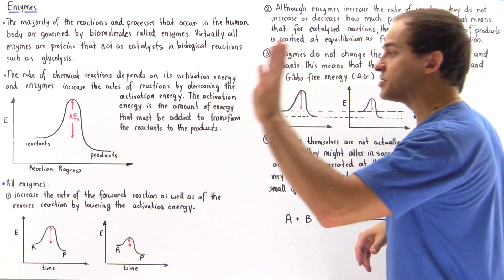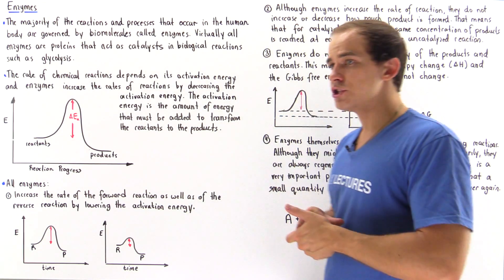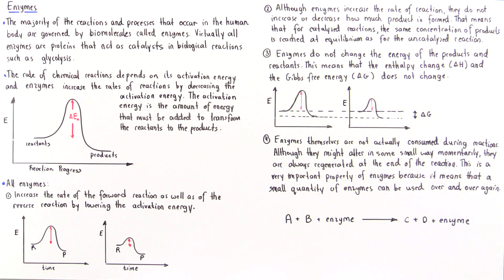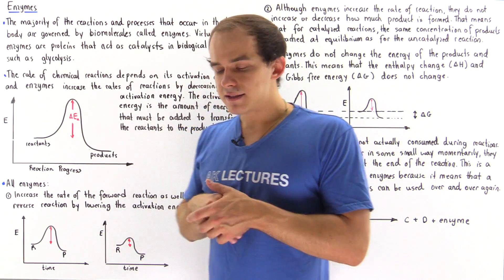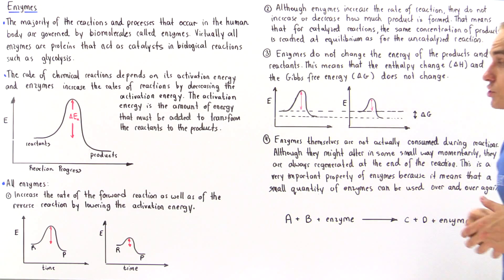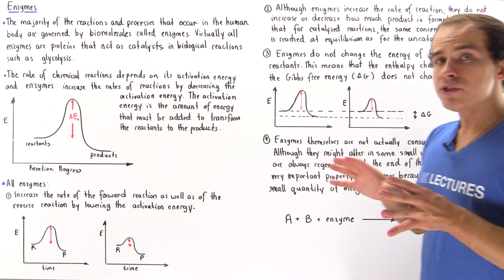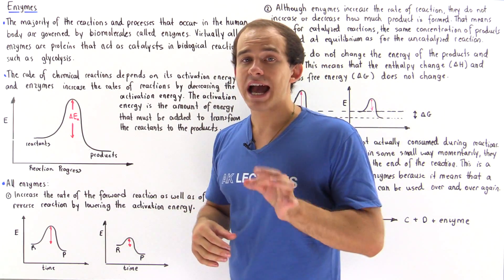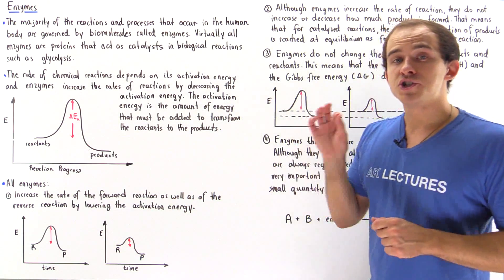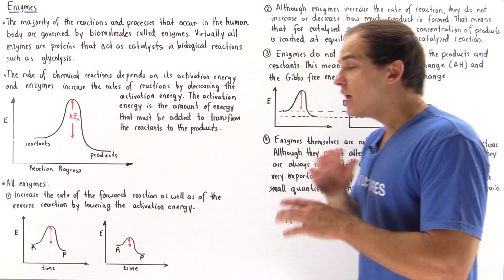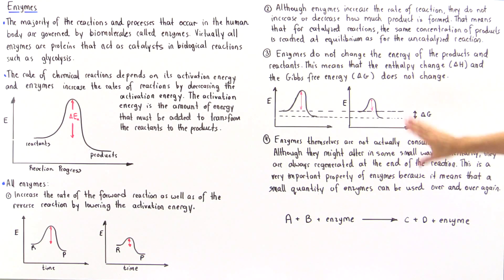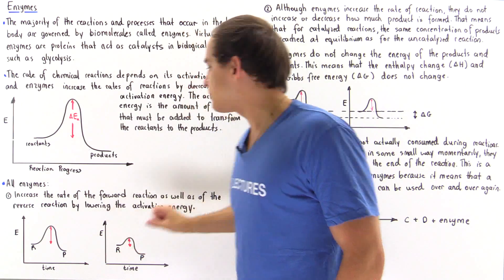Equilibrium is reached faster, but the actual concentrations of reactants and products at equilibrium do not change. The third important fact: biological enzymes do not change the energy of the products, nor do they change the energy of the reactants. That means the change in enthalpy or the change in Gibbs free energy of the overall reaction does not change. Let's take a look at the following two graphs.